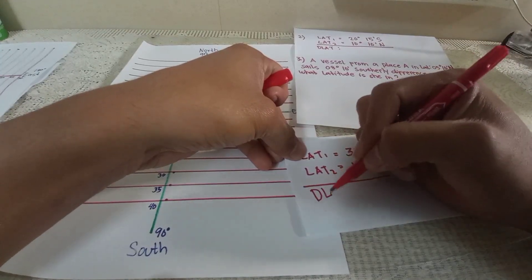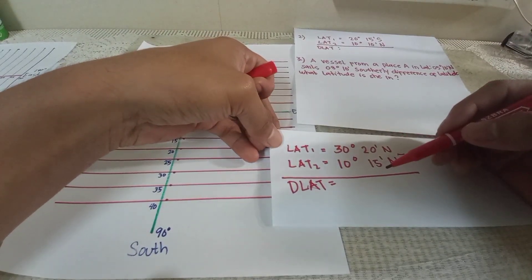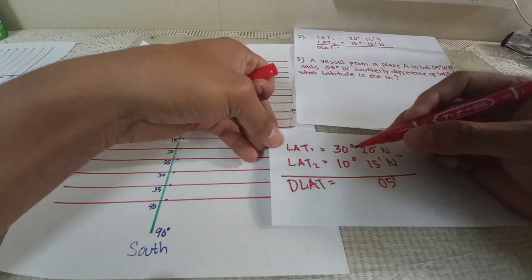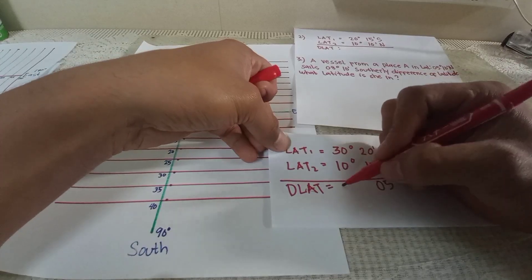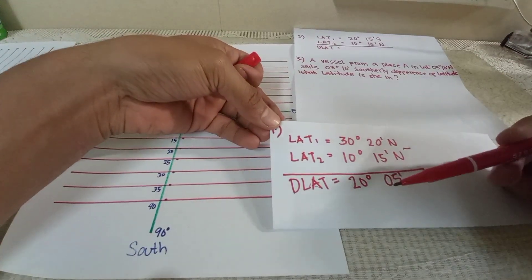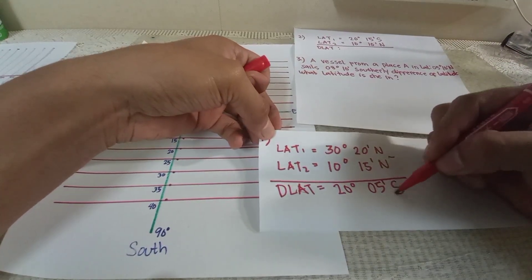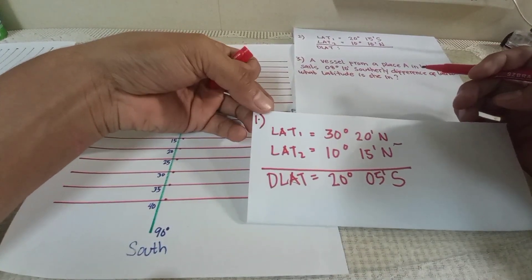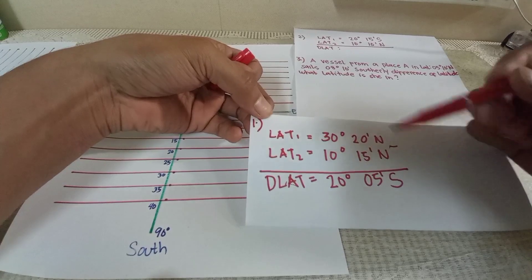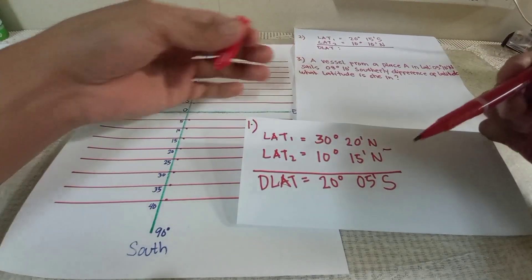We are looking for DLat. 20 minus 15 is 5 minutes. 30 minus 10 is 20 degrees. So what is the name of DLat? This is South. I know you are asking why the DLat is South — I will explain to you why, even though we have the same name, North-North.